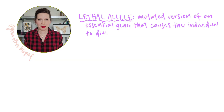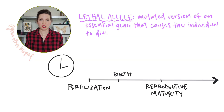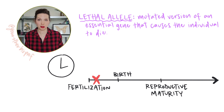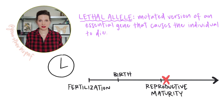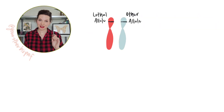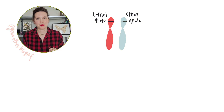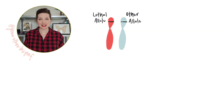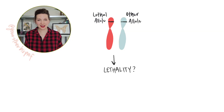The timing of lethality depends on when that product is needed. Lethality could occur early in development, like before birth in mammals, after birth, or not until adulthood. Diploid organisms like you and me inherit two copies of each chromosome — that's two alleles for each gene. Is a single lethal allele enough to see lethality, or do you need to have two?